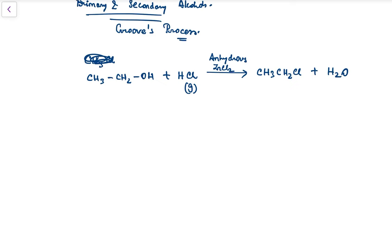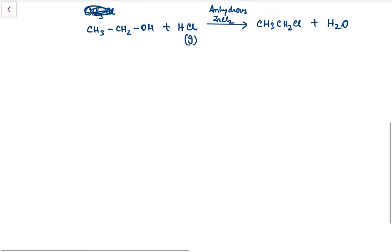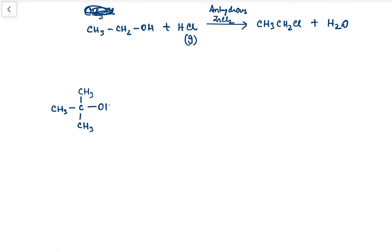In the case of tertiary alcohols, we actually don't need to use HCl gas or anhydrous ZnCl₂. Concentrated HCl acid is enough to chlorinate an alcohol which has a tertiary carbon, because tertiary alcohols are very reactive. In the case of tertiary alcohols, we can just use concentrated HCl and that will be enough.